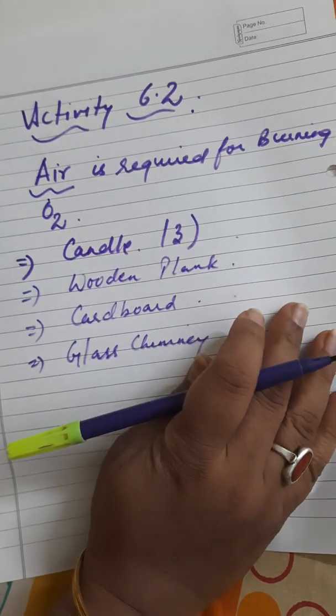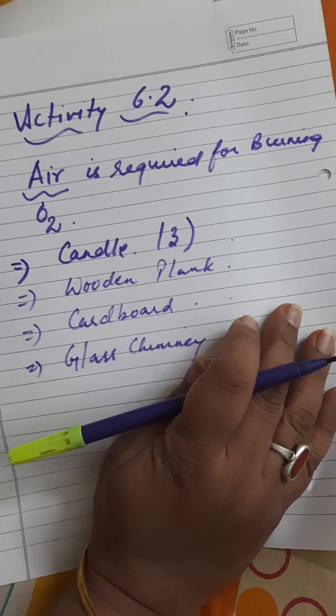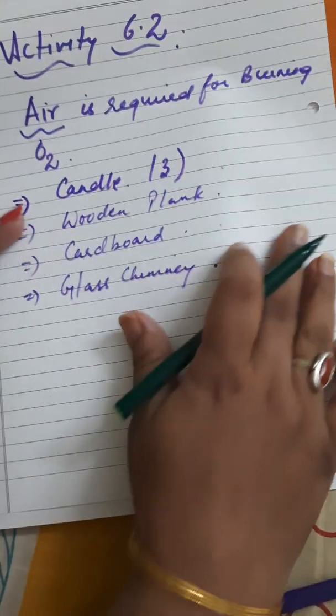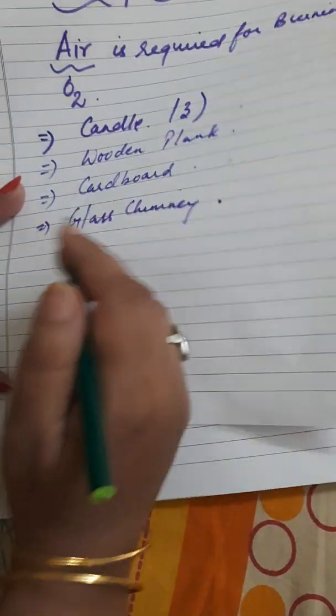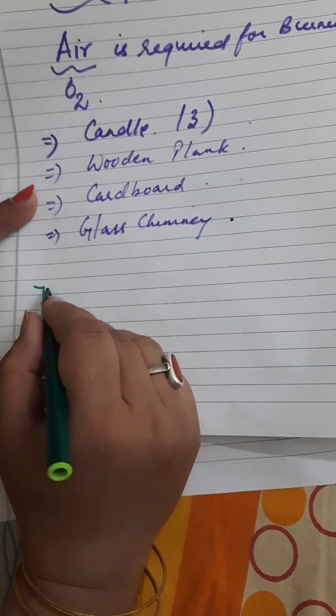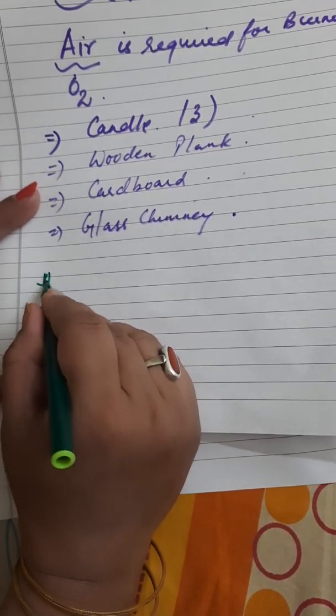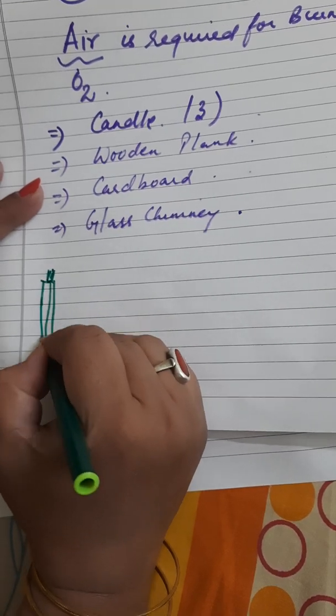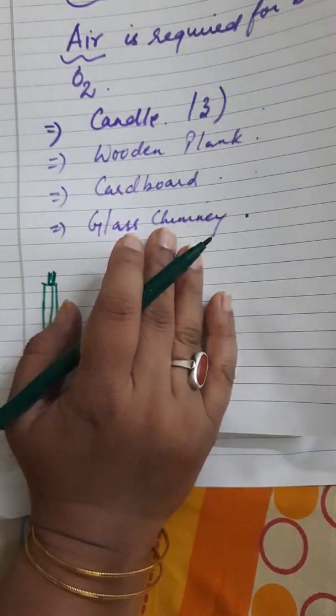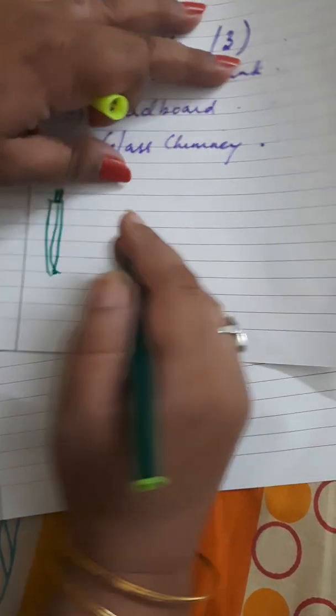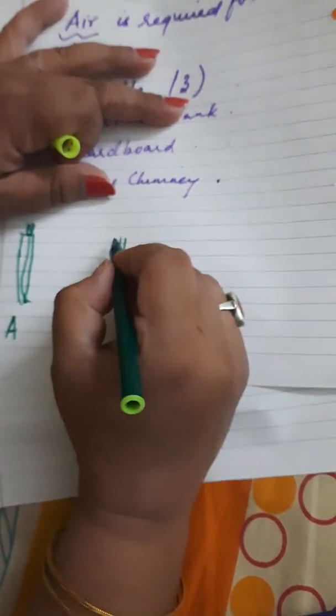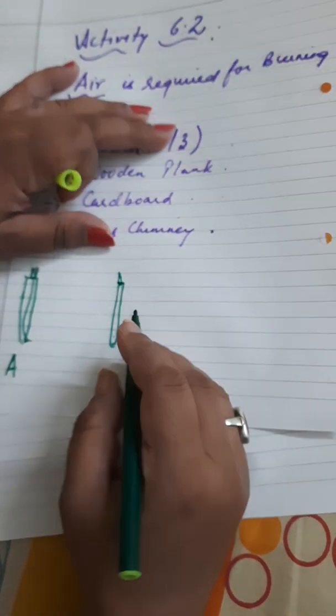Let me change the pen. Now children, the procedure. You will take the candles and name the first one candle A, the second one you will name candle B.